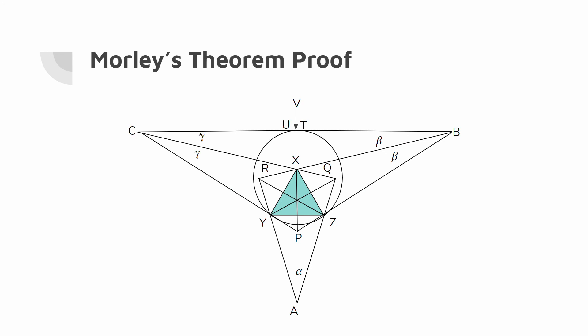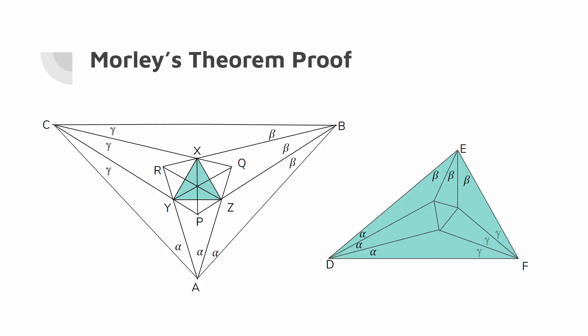We can use this same process to determine that angle PCA equals gamma and angle YAC equals alpha. Similarly, we can show angle PBA equals beta and angle ZAB equals alpha, resulting in a triangle with angles 3 alpha, 3 gamma, and 3 beta. We can now compare this triangle to the triangle at the very beginning of the proof. Since these triangles share all the same angles, they are similar. Since alpha, beta, and gamma can be any number, this shows that every triangle applies to Morley's theorem.